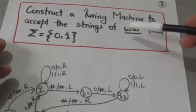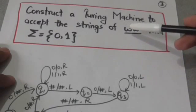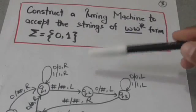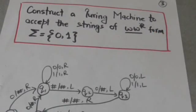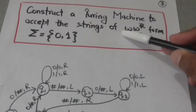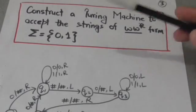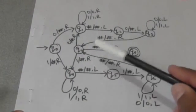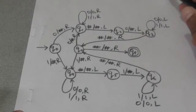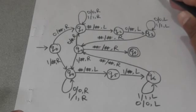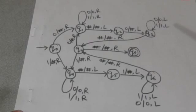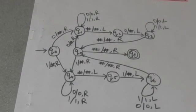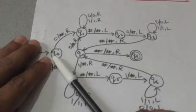Now let us construct a Turing machine to accept strings of the form WW^R, where W^R is the reverse of string W, and the set of input symbols contains only two symbols: 0 and 1. So the string will be made up of only 0s and 1s. This is the required Turing machine which will accept strings of the form WW^R where the input alphabet is {0, 1}.